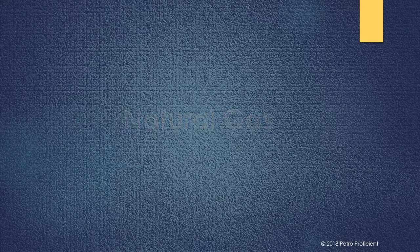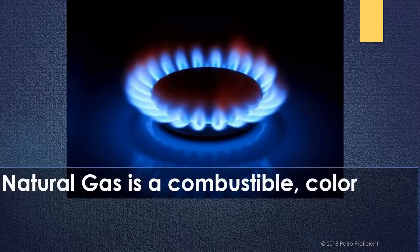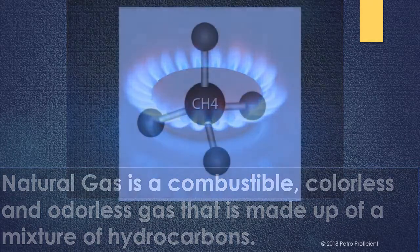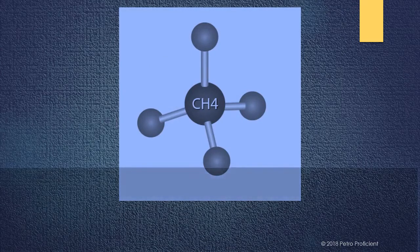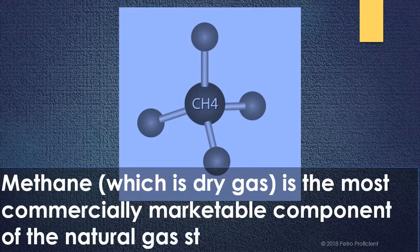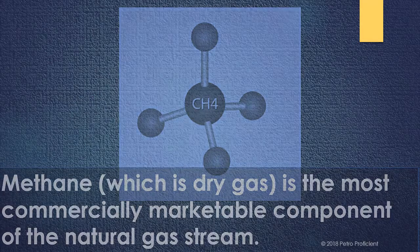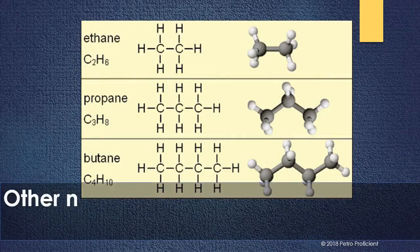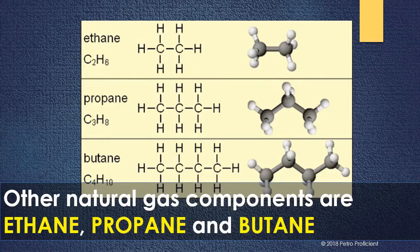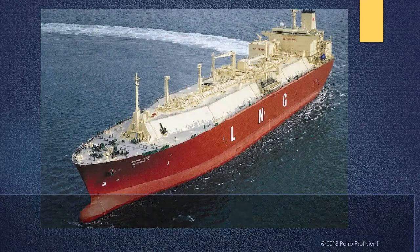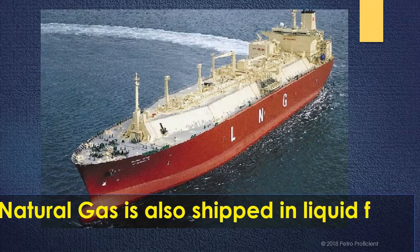Natural gas is a combustible, colorless, and odorless gas that is made up of a mixture of hydrocarbons. Methane, which is dry gas, is the most commercially marketable component of the natural gas stream. Other natural gas components are ethane, propane, and butane. Natural gas is also shipped in liquid form, popularly known as LNG, across countries.